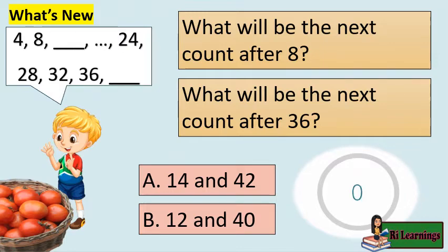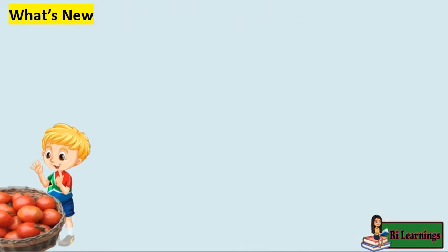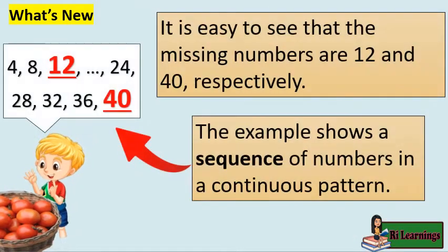If your answer is letter B, that is correct. It is easy to see that the missing numbers are 12 and 40, respectively, if you knew that the example shows a sequence of numbers in a continuous pattern.